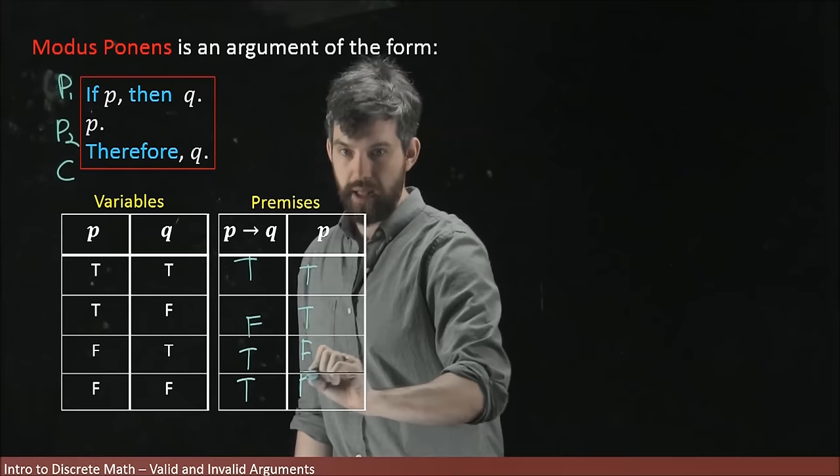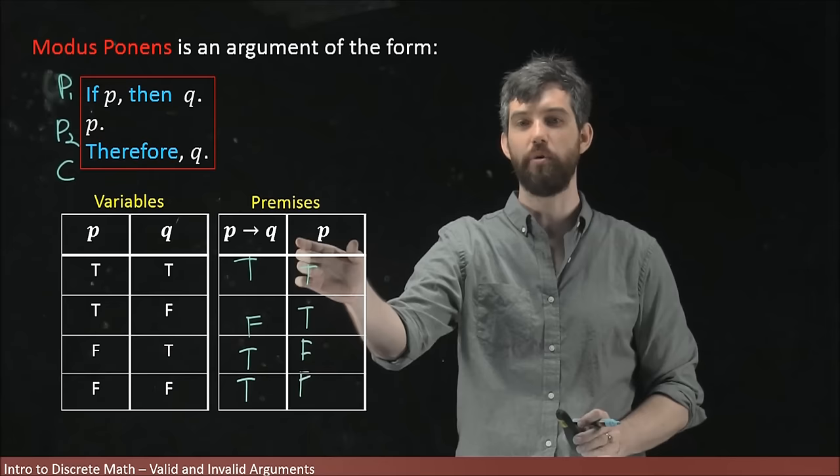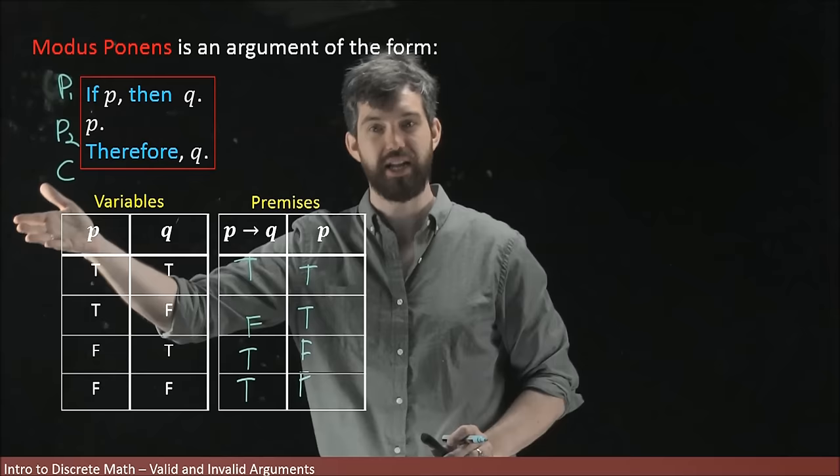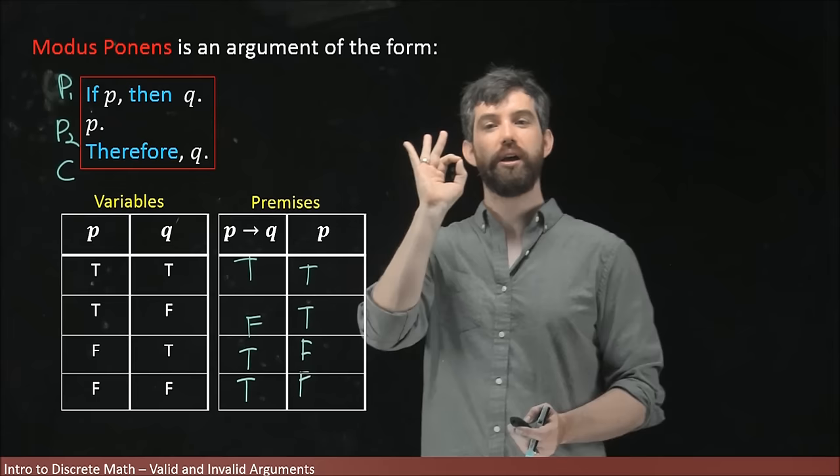And I'm doing it in this way just because I want to have one sort of block here that's got all of my premises. So even though P, which was a premise, just happened to, by coincidence, be a variable as well, I'm going to put it down in this section over here. So I've got my variables. I've got my premises. Final thing I want to write down is my conclusion. So my conclusion is going to be Q.